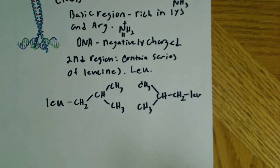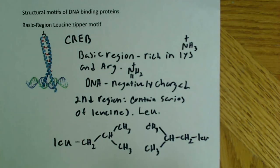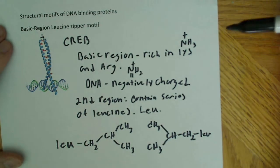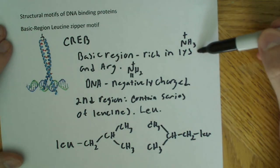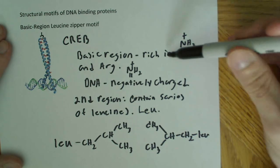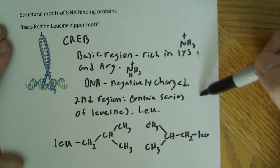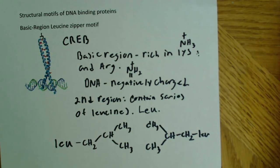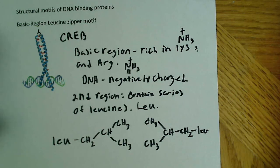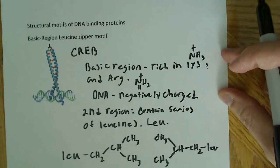I thought this was cool because it shows a number of different things. It shows a place where the alpha helix is actually useful and where it's interacting with DNA. It also shows that the alpha helix has these two different components — this basic region and this leucine region — with a hydrophobic/hydrophilic type of arrangement, which is common in most alpha helixes.